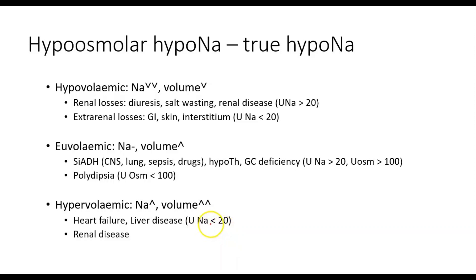While a low urine sodium is a consistent finding in heart failure, liver failure, and nephrotic syndrome, it is less consistent in other causes of renal disease because there may be impaired sodium reabsorption in the nephrons, leading to a high urine sodium of more than 20 millimoles per liter. Urine sodium is therefore less useful in hypervolemic hyponatremia, where the underlying etiology is usually obvious from whether the patient has significant heart, liver, or kidney disease.